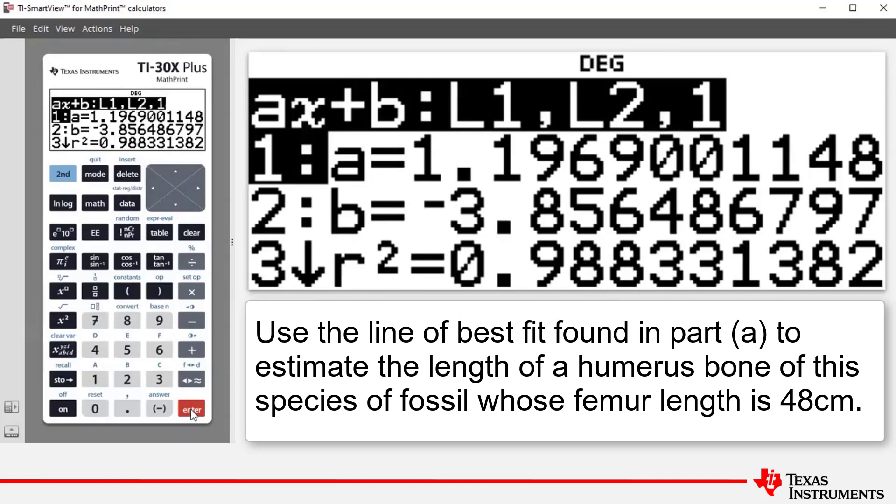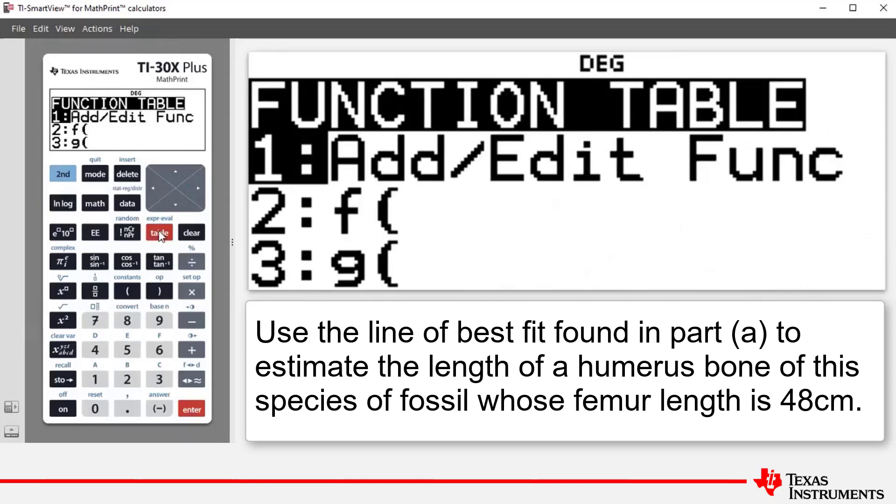So the calculator has stored for us this line of best fit. We just need to find it. Where we can find it is by pressing table. And it takes us to the function table menu. If we press 1 or enter,